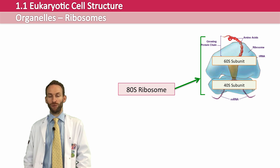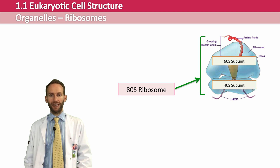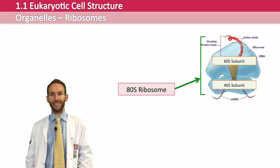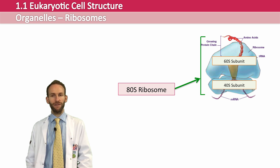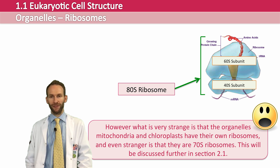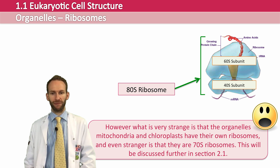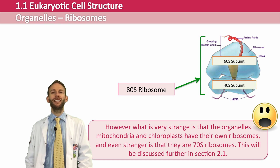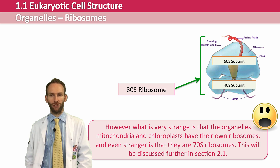The rate of sedimentation is related in a complex way to the mass and shape of the molecule, so when the subunits are combined they have different properties. All eukaryotic cells have 80S ribosomes, which are larger than the 70S ribosomes found in prokaryotic cells. Interestingly, mitochondria and chloroplasts have their own ribosomes — and they are 70S ribosomes, the same type as prokaryotic cells. This relates to something called the endosymbiotic theory, discussed more in section 2.1.